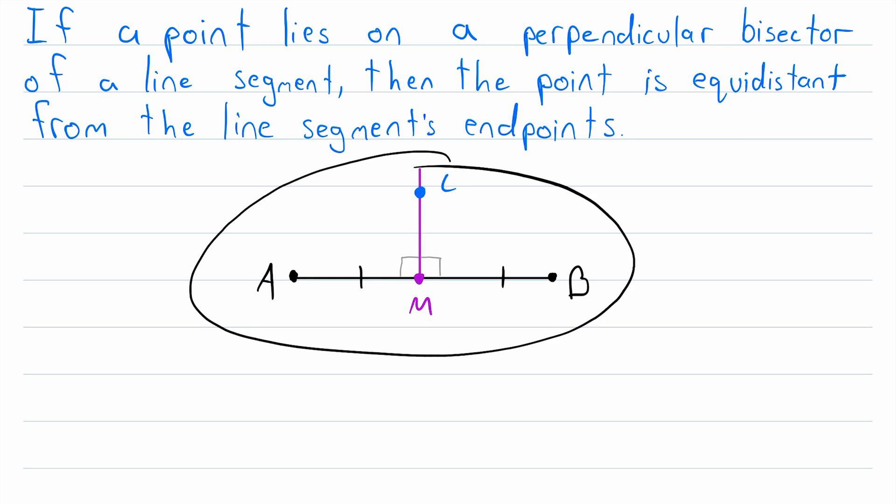So now we've sort of represented the conditions of the theorem. We have a point on a perpendicular bisector of a line segment. But notice in our drawing that the point on the perpendicular bisector is not on the line segment AB.